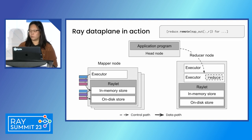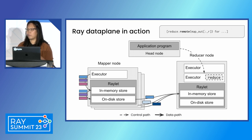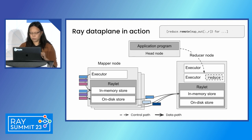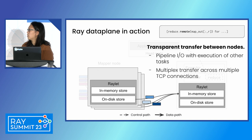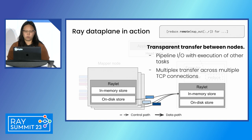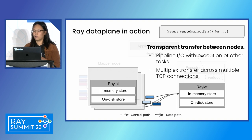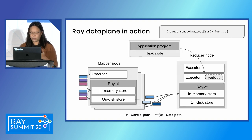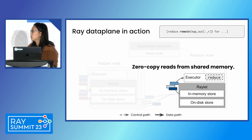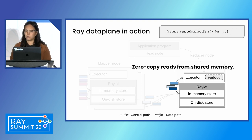Later on, we submit some reduce tasks which have dependencies on those map outputs. We transfer one map output from each of the map tasks, and here we can see where the transparent distributed transfer is happening. There are also a number of nice performance optimizations under the hood, like being able to overlap this transfer with the execution of other reduce tasks and also multiplexing the transfer across multiple connections. Once the reduce task reads these objects, here is where we can see the benefit of shared memory — we get these zero-copy reads.